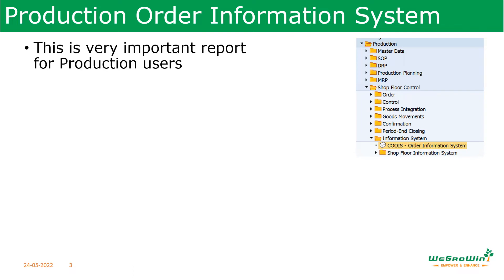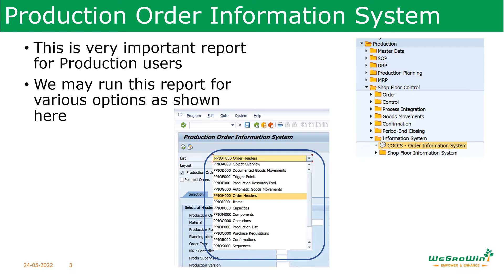When you click on COOIS and go to the transaction, you will see various options to enter. It starts with the list — what is displayed. In the list, you can see what you want as output from the report: order headers, items, capacities, components, operations, the production list, purchase requisitions with respect to production orders. We will select order headers and execute the transaction.